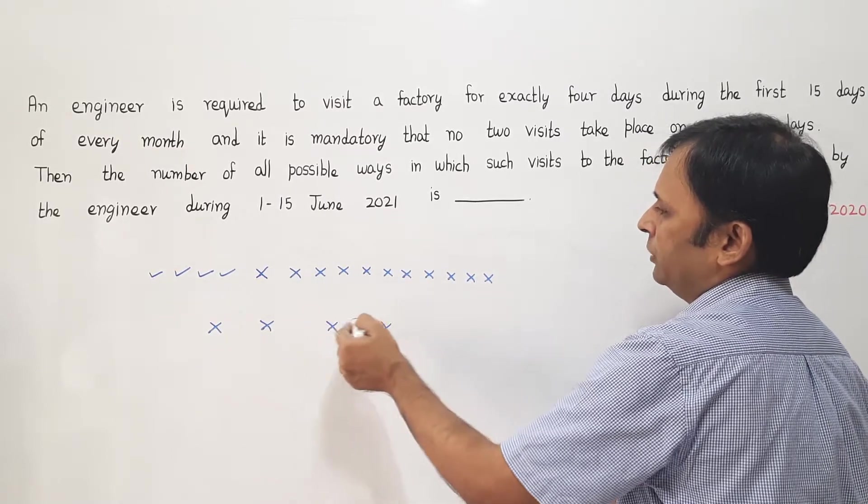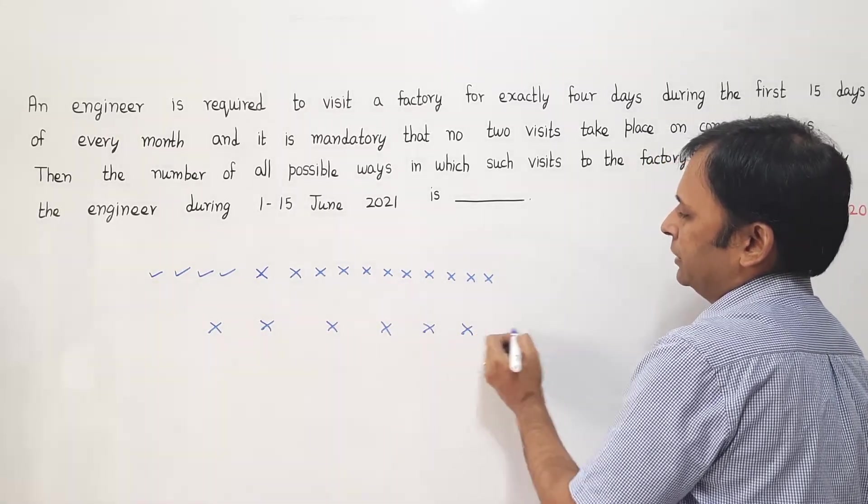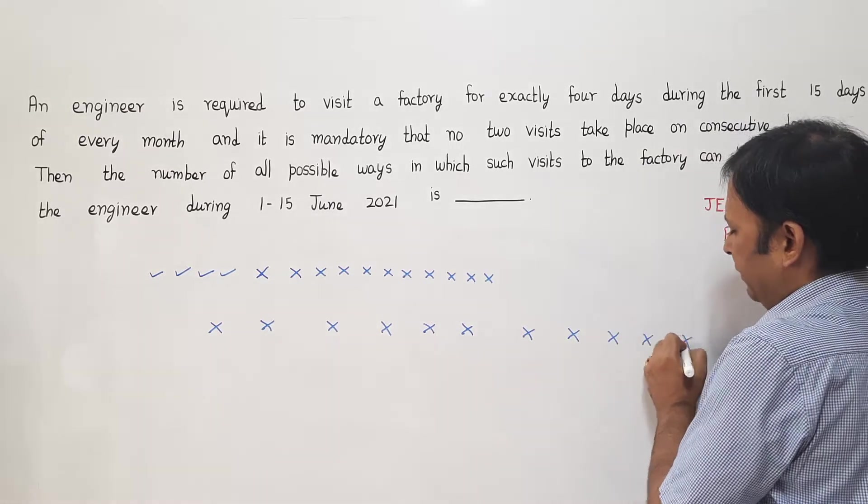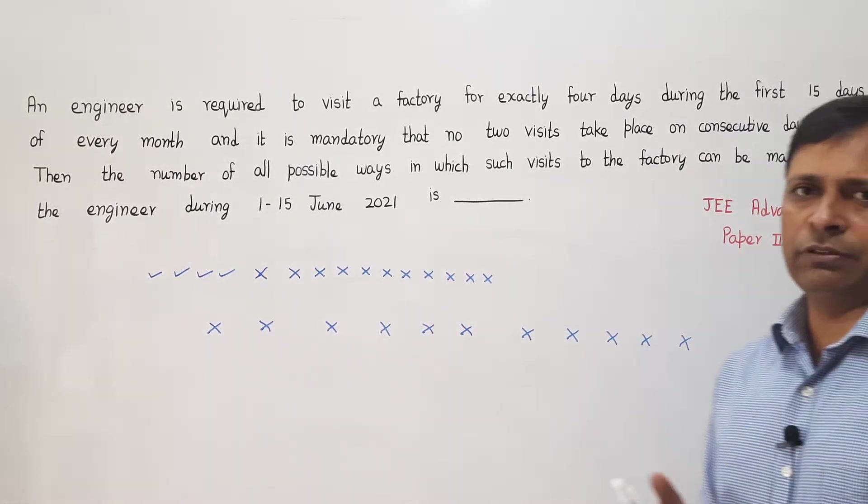So I am placing 1, 2, 3, 4, 5, 6, 7, 8, 9, 10, and 11. So I have placed 11 crosses like this.